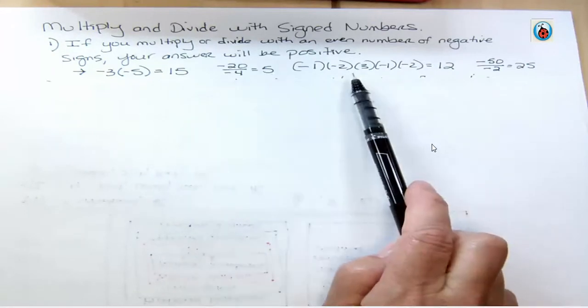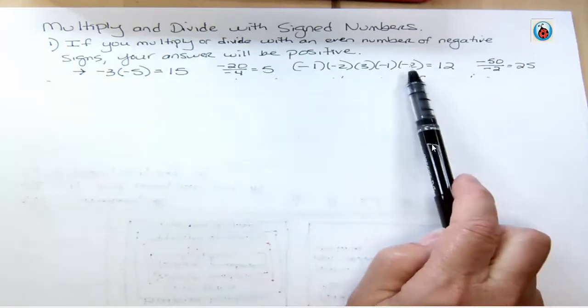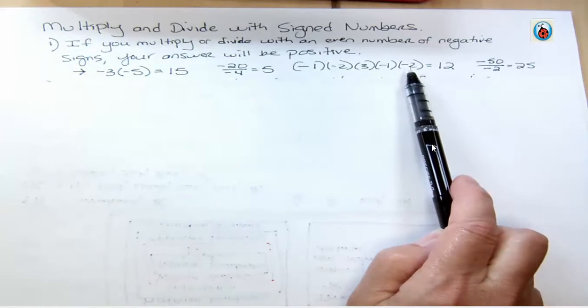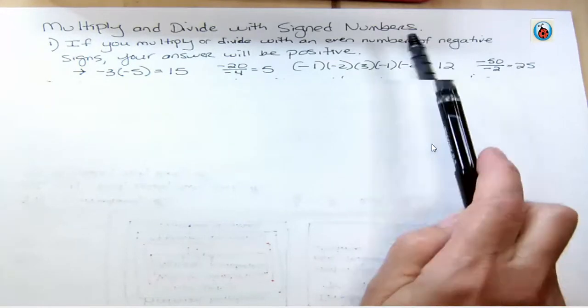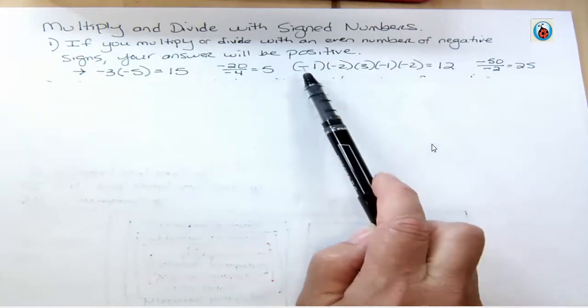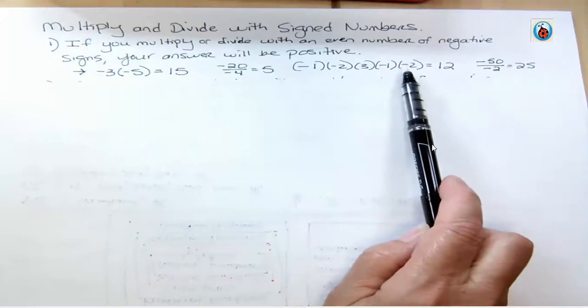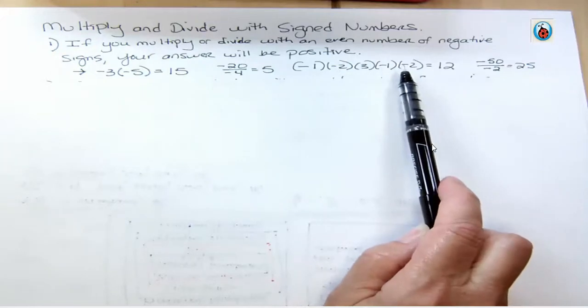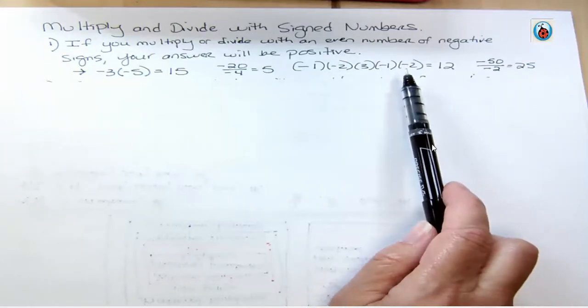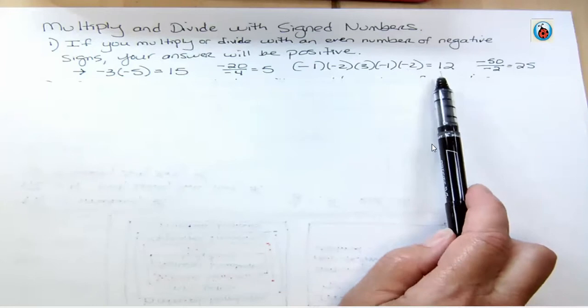Here I have 1, 2, 3, 4, 5 terms. But count the number of negatives. That's what I'm saying, the number of negative signs. You have 1, 2, 3, 4 negative signs. Since you have 4 negative signs, that's an even number that's going to give you positive 12.